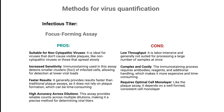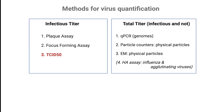The focus-forming assay offers several advantages: it is highly accurate, providing reliable counts over multiple dilutions; it is rapid compared to traditional plaque assays; and it is essential for non-cytopathic viruses that do not cause visible plaques. However, it has low throughput, requires a nearly perfect cell monolayer, and is expensive and laborious due to the immunostaining process.